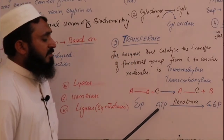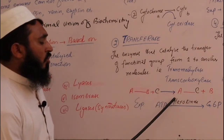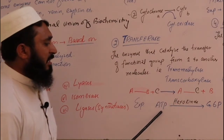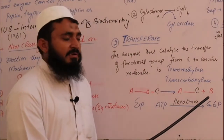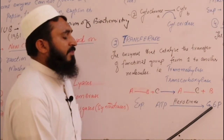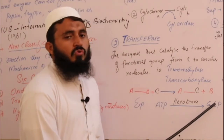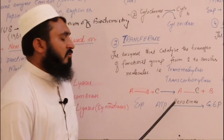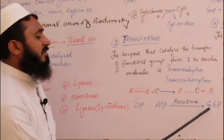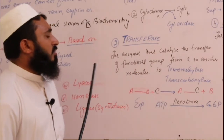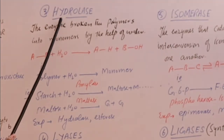For example: ATP has a phosphate group. Due to hexokinase enzyme, glucose takes this phosphate. Since glucose is a 6-carbon compound, it attaches the phosphate to carbon number 6, forming glucose-6-phosphate. The phosphate group is thus transferred from ATP to glucose — completing a transferase reaction.